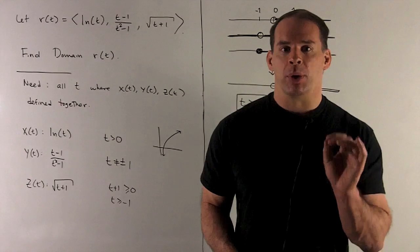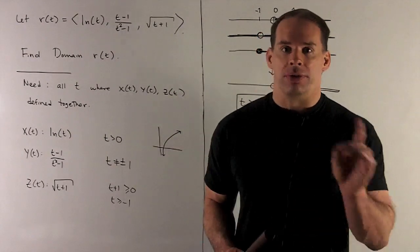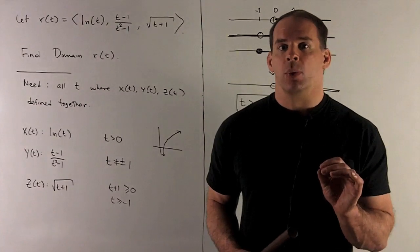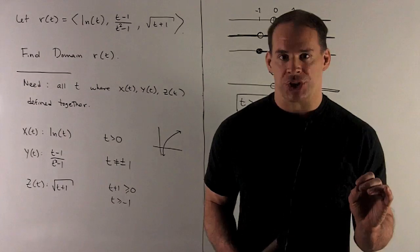So the idea is if I put a t in and one of these fails, then the whole thing fails. So what we're going to do is take the domain of each function, take the intersection.